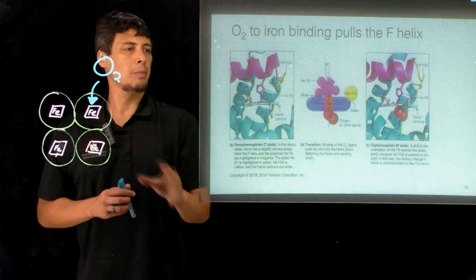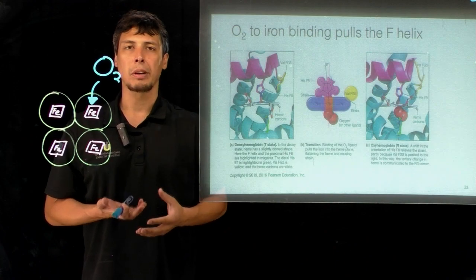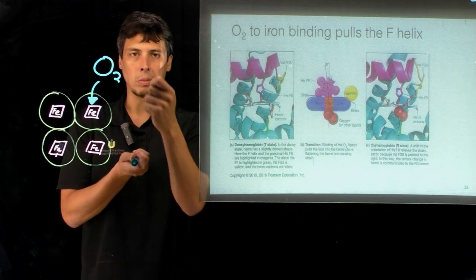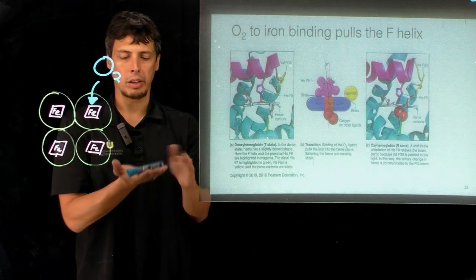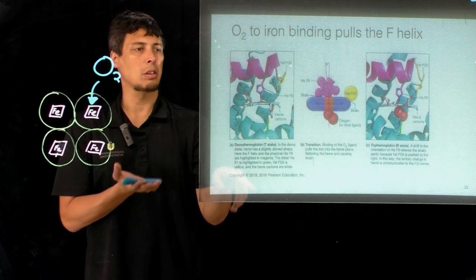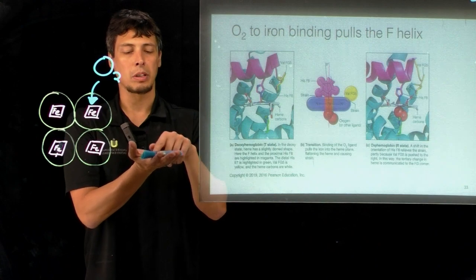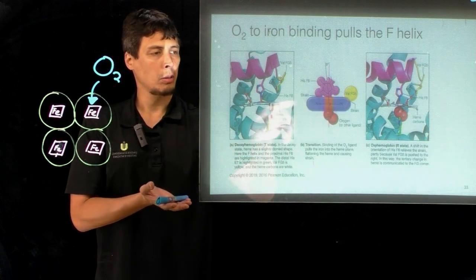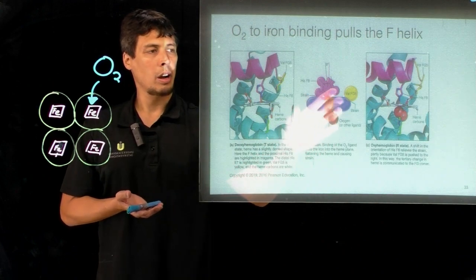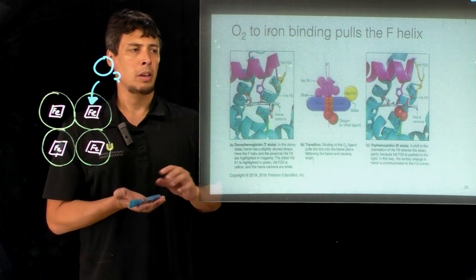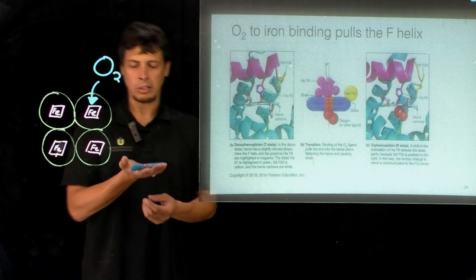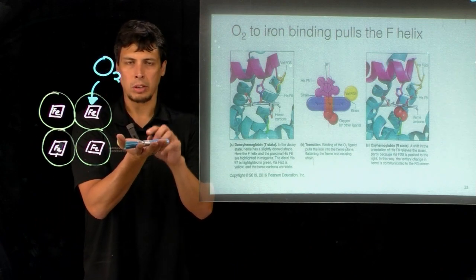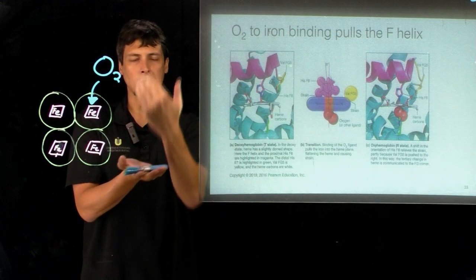When oxygen binds to the iron, there's a change in the conformation of the iron. When oxygen binds to the iron, it pulls the iron back into the plane of the histidine. So now this is in the center of the plane of the heme. We can see this in this middle panel here where the iron is back in the plane of the heme. The effect is that oxygen pulls the iron into the plane of the heme, and the proximal histidine that's also bound to the iron gets pulled as well.